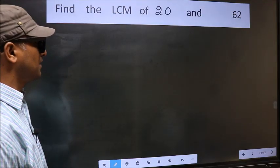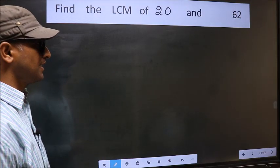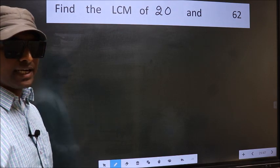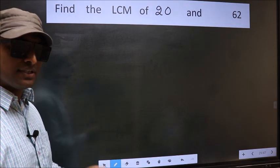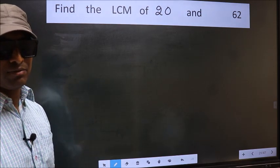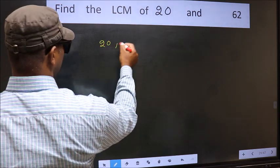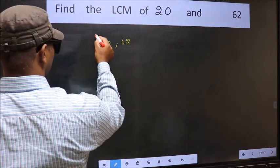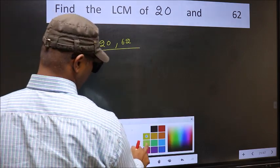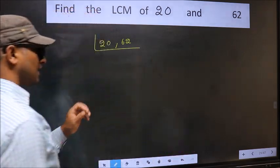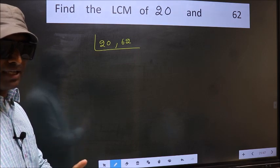Find the LCM of 20 and 62. To find the LCM, first we should frame it in this way. 20, 62. This is our step 1.